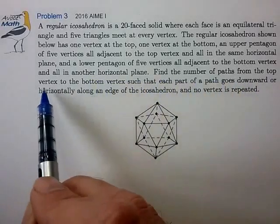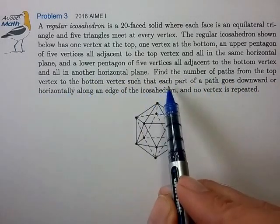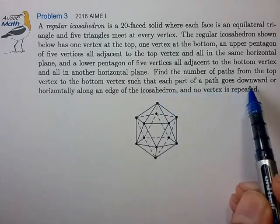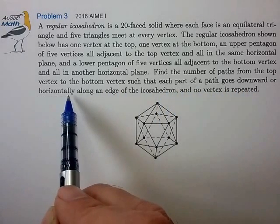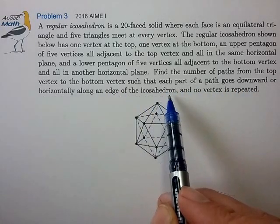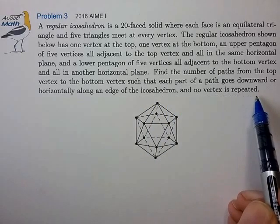Find the number of paths from the top vertex to the bottom vertex such that each part of the path goes downward or horizontally along an edge of the icosahedron, and no vertex is repeated.